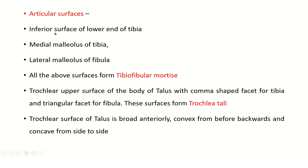Articular surfaces: the inferior surface of the lower end of tibia, medial malleolus of tibia, and lateral malleolus of fibula — all these surfaces form the tibio-fibular mortise. The trochlear upper surface of the body of the talus has a comma-shaped facet for tibia and a triangular facet for fibula, forming a continuous surface called the trochlear tali. The trochlear surface of the talus is broad anteriorly, convex from before backwards, and concave from side to side.